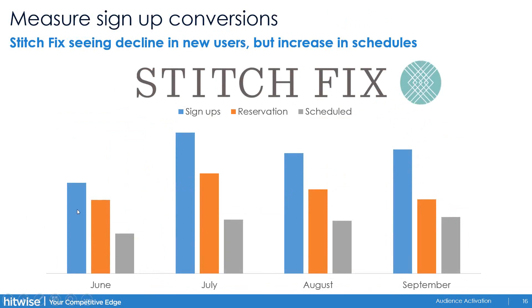Interestingly, while signups and reservations declined, the 'schedule' step — where users provide credit card info and request a specific shipment date — actually moved up. This shows that looking only at overall site visits misses at least three levels of information. Stitch Fix can also build audiences the same way as the Home Depot/Lowe's example: understanding who signed up but didn't reserve, or who reserved but didn't complete scheduling, to better target and convert those users.